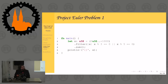This is a very Rusty implementation using iterator adapters. We start with a range iterator from 0 to 1000, filter that range for all numbers evenly divisible by 3 or 5, and then sum up those numbers. No for loops, no nothing - just plain iterator adapters in Rust.